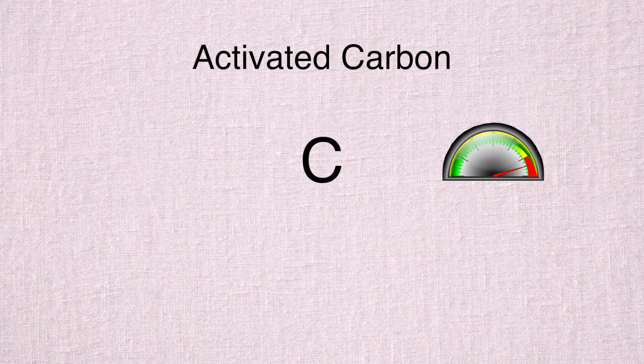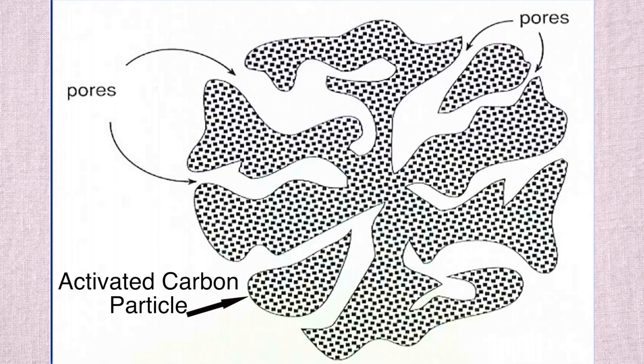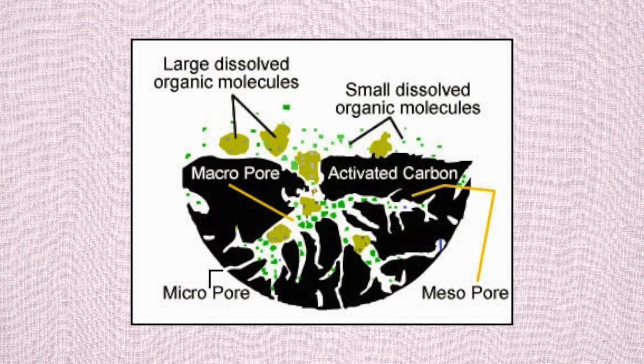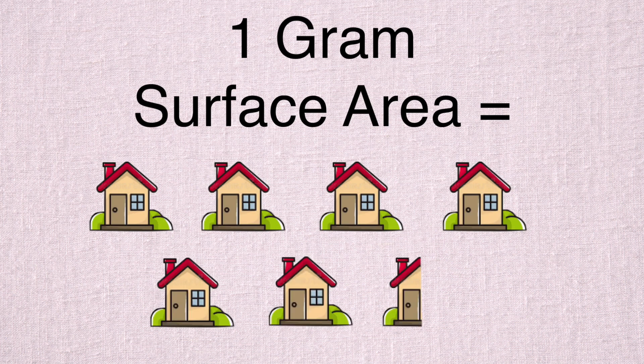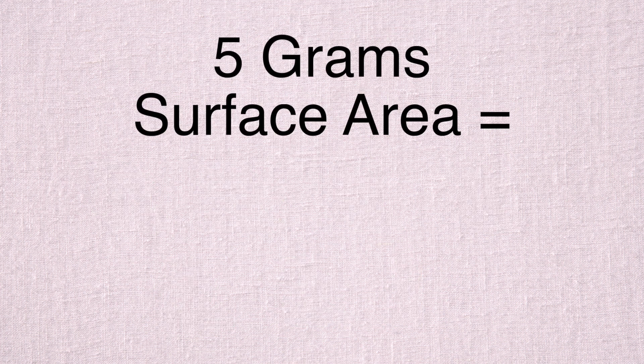Activated carbon is created by bringing carbon to a very high temperature in the absence of oxygen, where it creates micropores throughout the carbon particles. These micropores give activated carbon an average surface area of over 1,000 square meters per gram, which means that a single gram of this material has the surface area equivalent to about 6.5 average size U.S. households.